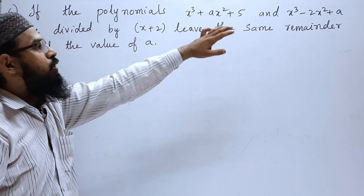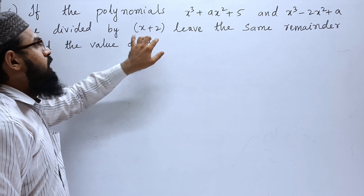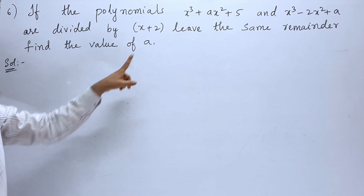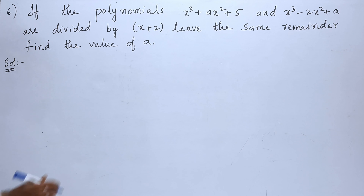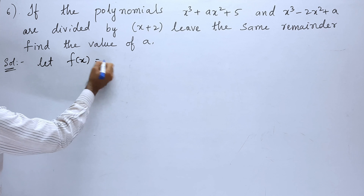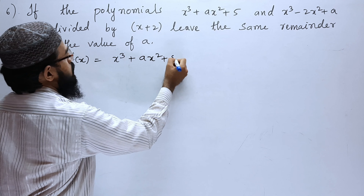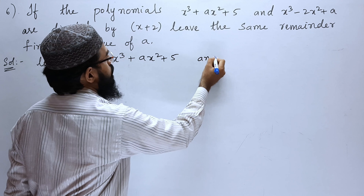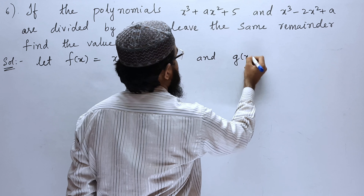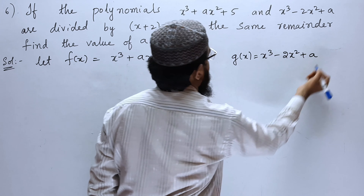So when these two polynomials are divided by this polynomial, they leave the same remainder. With the help of that, we have to find the value of a. Let f(x) = x³ + ax² + 5 and g(x) = x³ − 2x² + a.